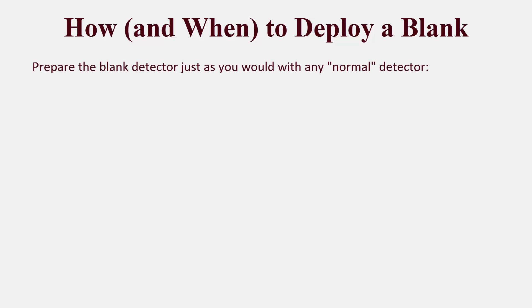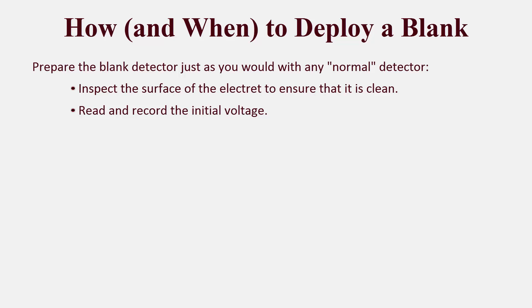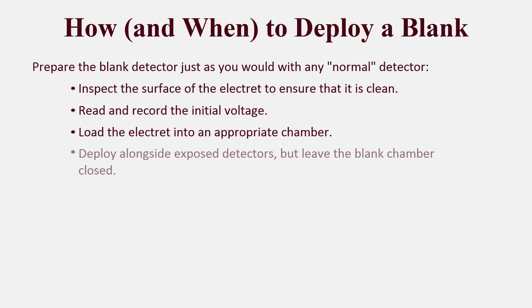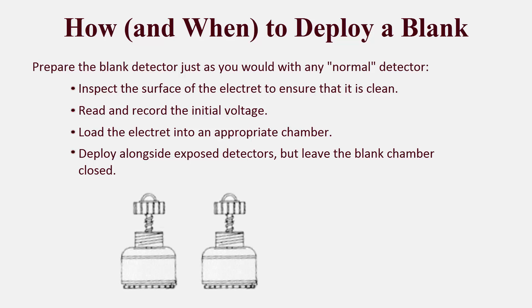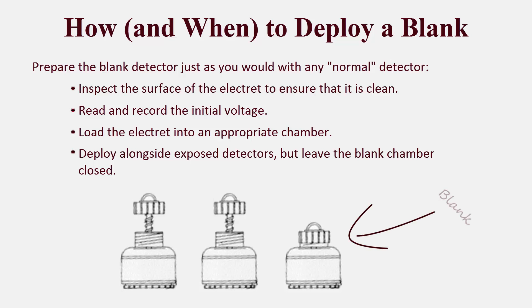Prepare the blank detector just as you would with any normal detector. This means inspecting the surface of the electret to ensure that it's clean, and if it's not, clean it with a solid blast of compressed nitrogen. After making sure that your electret surface is clean, read and record the initial voltage, and then load the electret into an appropriate chamber. When you're ready to begin the radon test, deploy the blank alongside your exposed detectors, but leave it closed. After all, the whole purpose of a blank is to not measure radon.